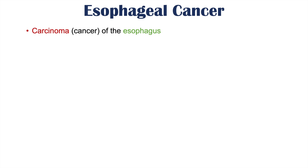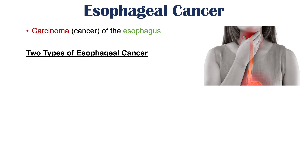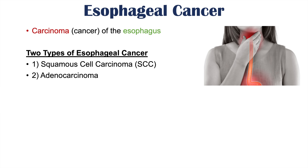Esophageal cancer is a carcinoma or cancer of the esophagus. The esophagus is the upper portion of the gastrointestinal tract that connects the mouth to the stomach, allowing passage of food. There are two main types of esophageal cancer: squamous cell carcinoma and adenocarcinoma.